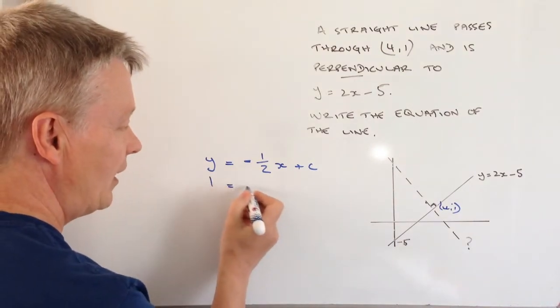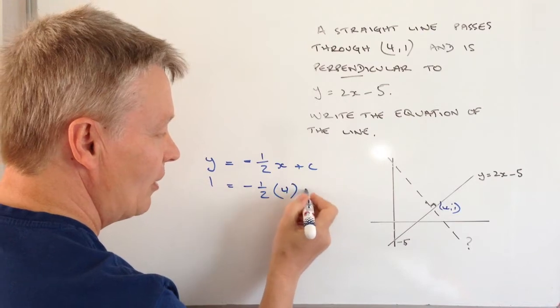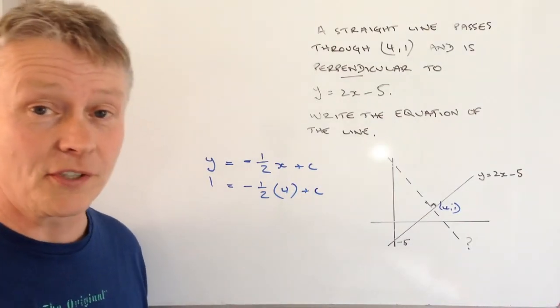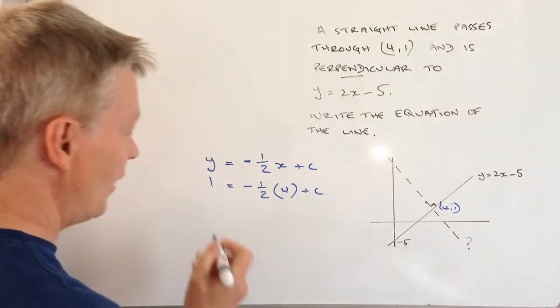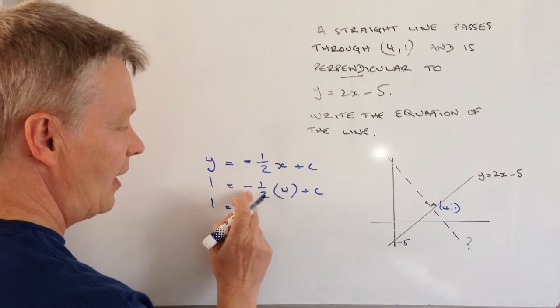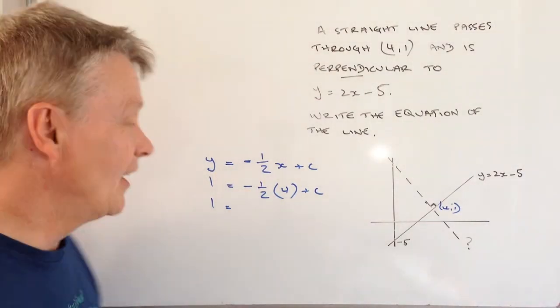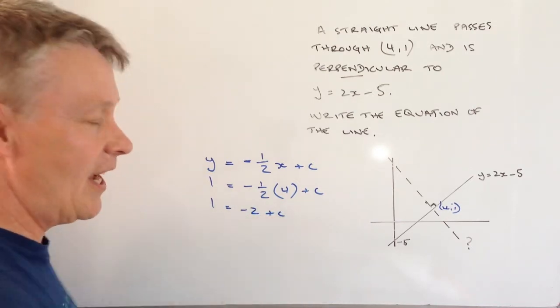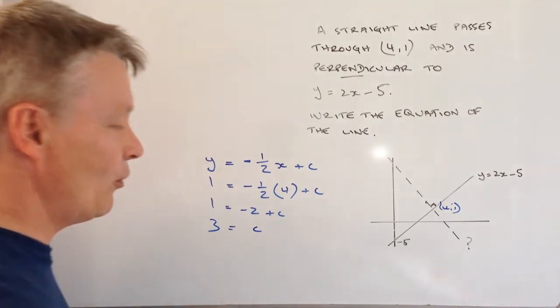So y is 1 = -1/2 × 4 + c. When we calculate this, that will give us the value of c. So let's do that. -1/2 × 4, well a half times 4 is going to be 2. Minus that is going to be -2 + c. If I add 2 to both sides, it means that c = 3.